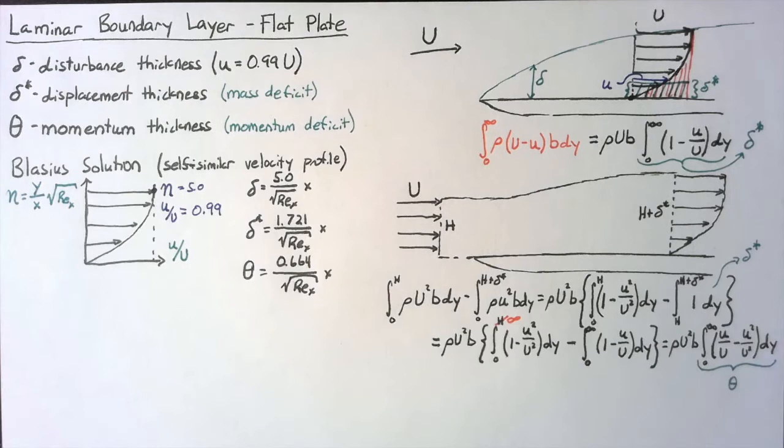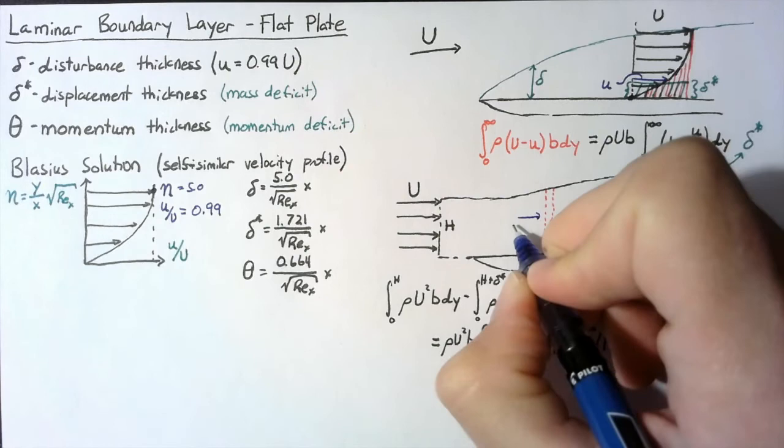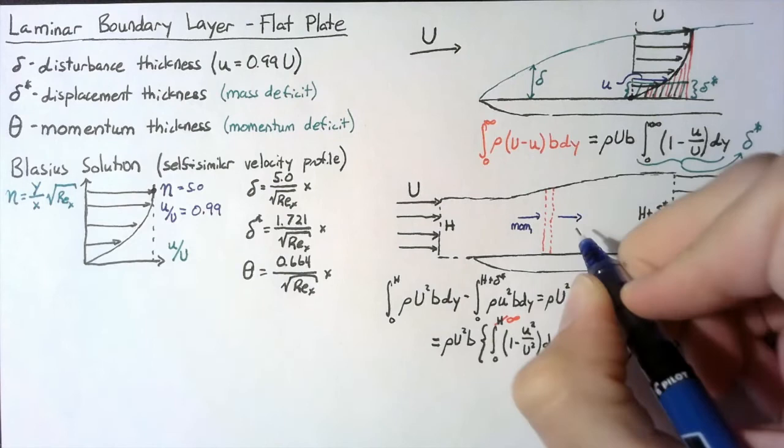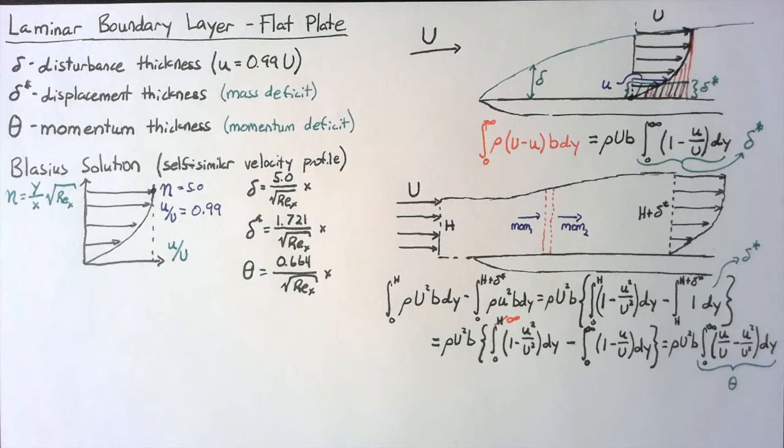So our question here is, how do we get from this momentum thickness to the shear stress? The way we can do that is by taking a thin little slice of this control volume. Coming into this little slice, we're going to have some momentum — the momentum going into phase 1 — and coming out, we're going to have a different momentum, the momentum from phase 2. These two are going to be different; there's going to be some change in momentum, but the mass is going to be the same.